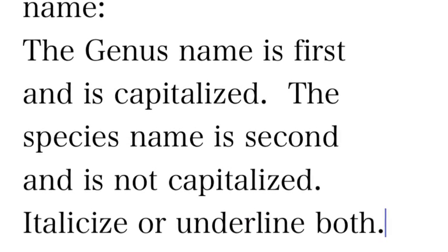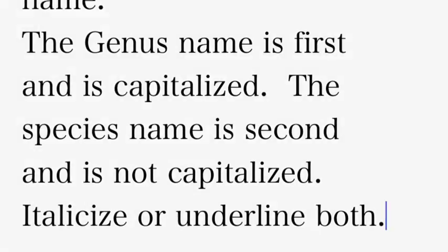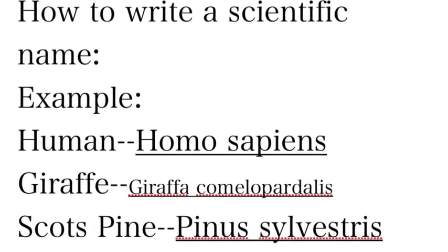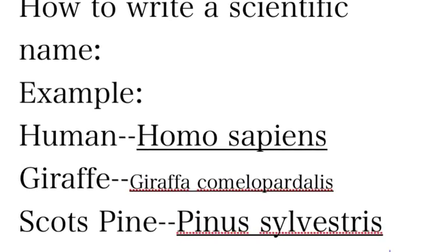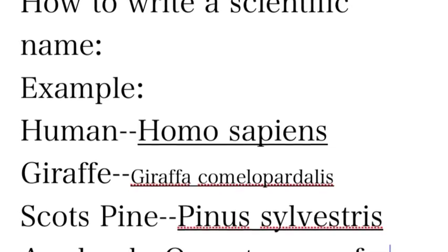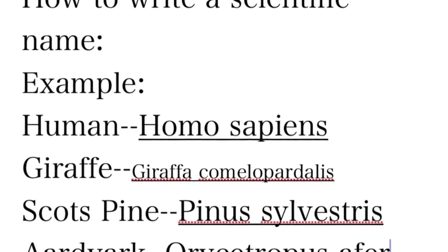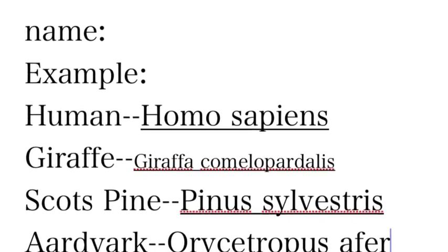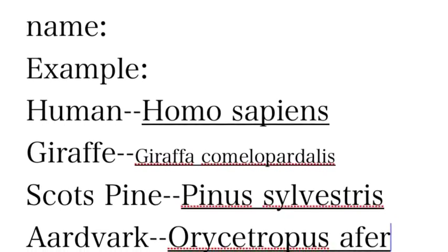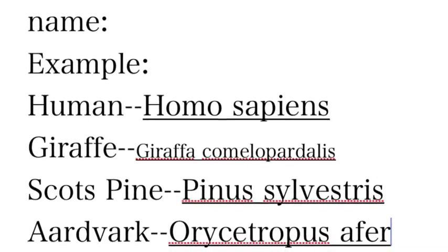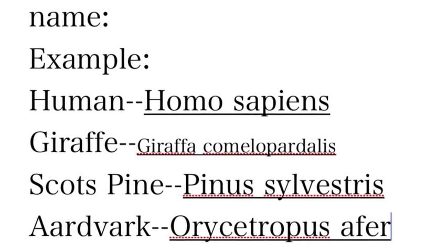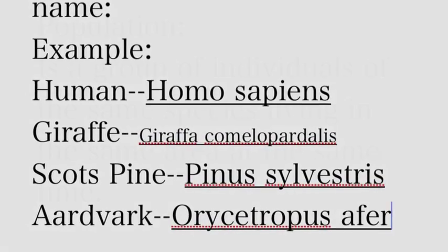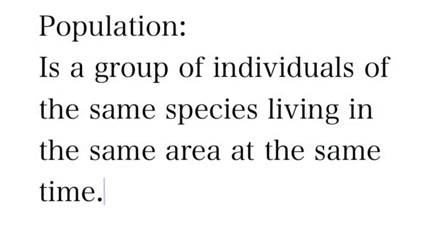The way we write a species name is using a scientific name. We capitalize the genus but do not capitalize the species name, and we underline both of them. Here are some examples for human, giraffe, and pine.